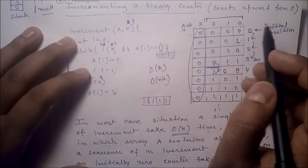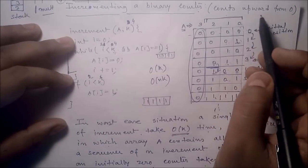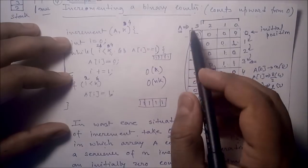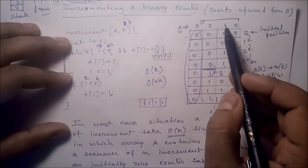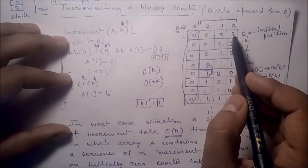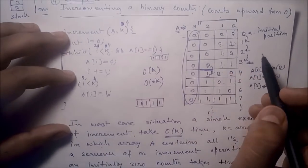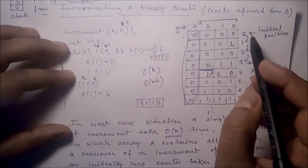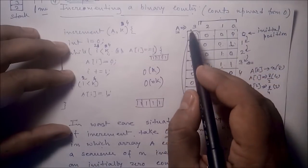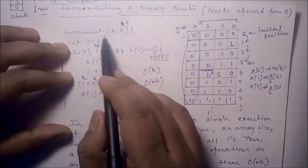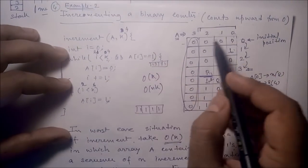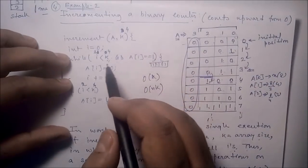The second example is incrementing a binary counter, counting upward from 0. Consider an array A of size k=4, initially all zeros: [0, 0, 0, 0]. When we call Increment(A, k), we initialize i=0. Since i < k and A[i] = 0, we set A[0] = 1. After the first increment the array is [1, 0, 0, 0].